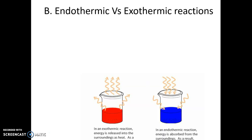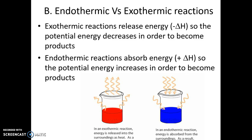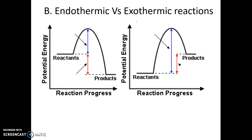We'll look at the difference between endothermic and exothermic reactions on a potential energy diagram. Exothermic reactions release energy and have a negative delta H — the potential energy decreases as reactants become products, releasing that energy. For endothermic reactions, energy must be absorbed, so in order for reactants to become products there is an addition of energy, and the graph goes up.